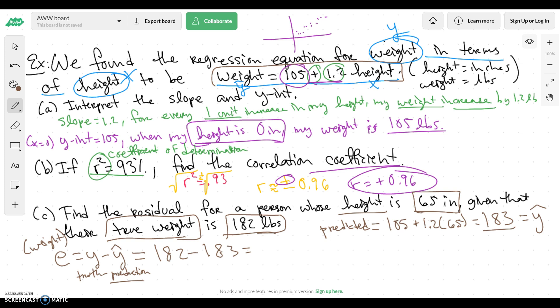Okay, so 182 minus 183 gives me negative 1. So I was very close in predicting it. I was just, I kind of overestimated my prediction. I overestimated by one. That's why we have a negative. That means I overestimated this thing. So hopefully this helps with the interpretation, with the r squared and correlation and also with the residual.